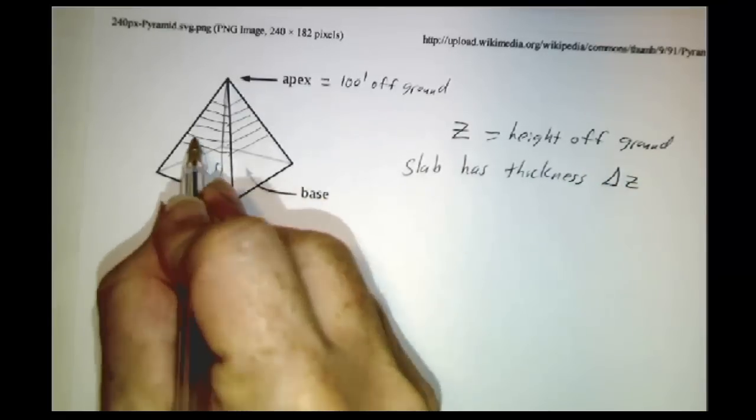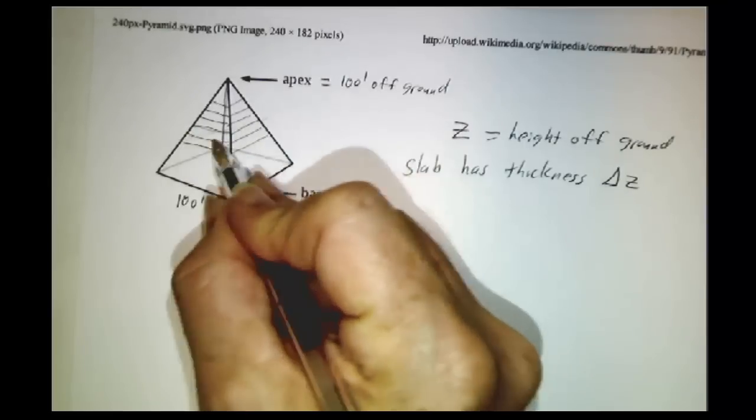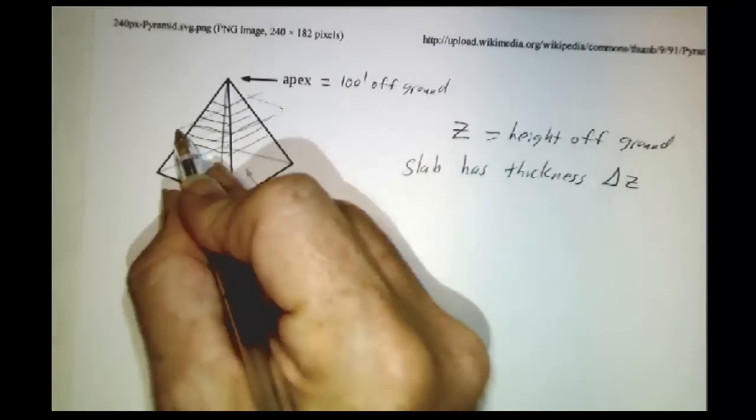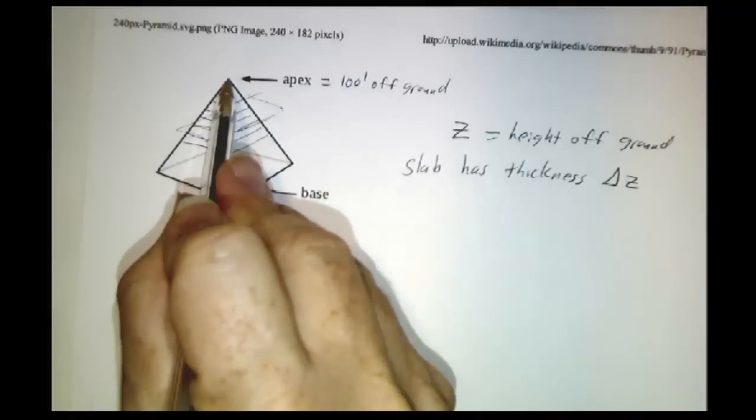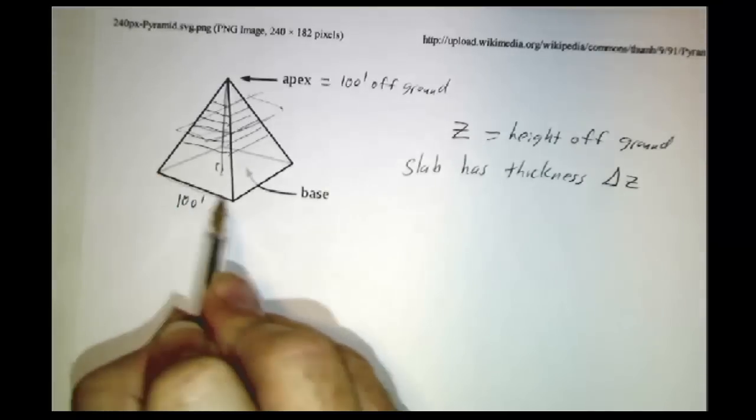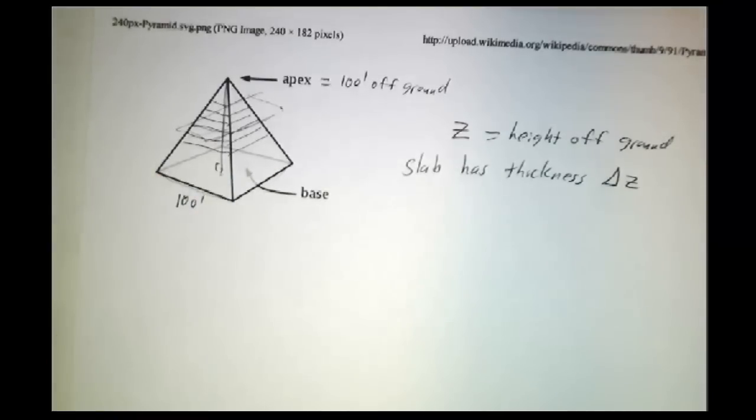And you have to figure out, well, what is the area? When you cut the pyramid at a certain height, you're going to get a square. And to figure out, well, what's the side length of the square? If you're all the way at the top, the side length is zero. If you're all the way at the bottom, the side length is 100 feet.